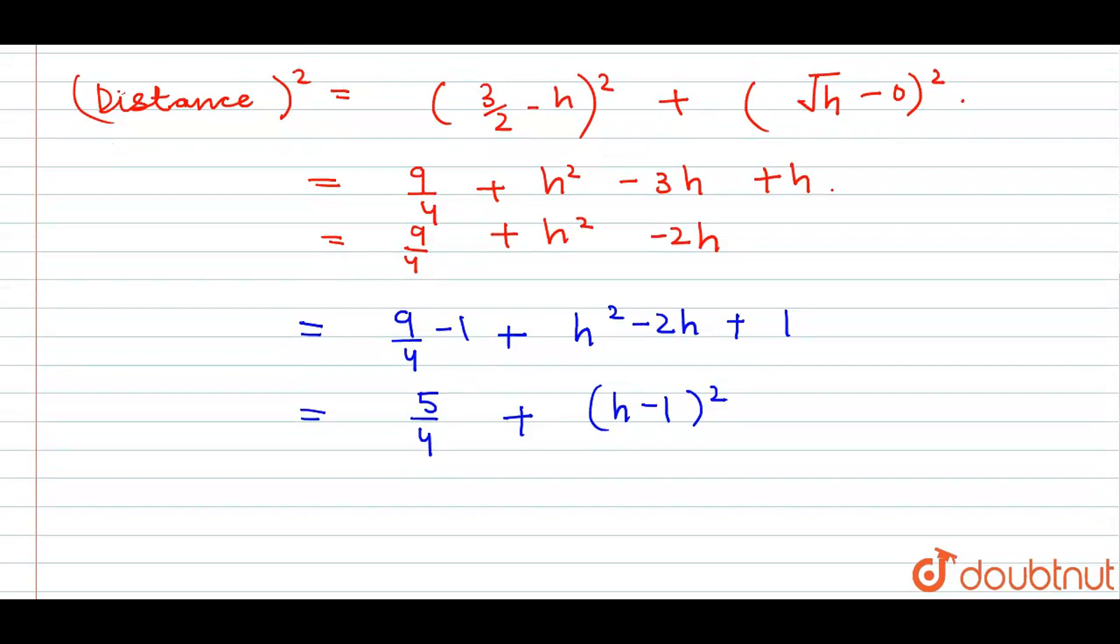So now what we want is minimum distance. The minimum distance is when this term becomes 0. For this term to become 0, we want h to be 0. So keeping h equal to 0,